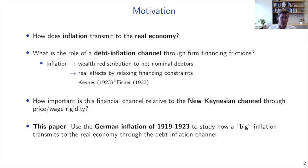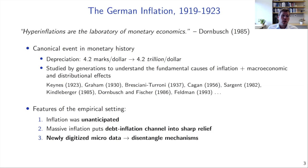If these debtor firms are financing-constrained, the increase in their net worth may relax that financing constraint, giving them more liquidity they can use to invest or hire more workers, having real effects by increasing output. We want to think about the role of this debt inflation channel relative to the New Keynesian channel that operates through price and wage rigidity, which has received more attention in the inflation transmission literature.